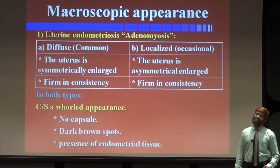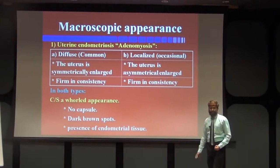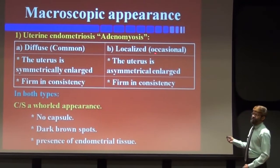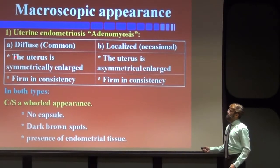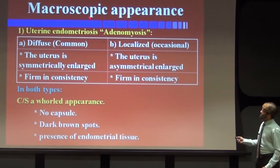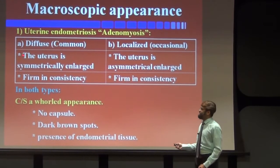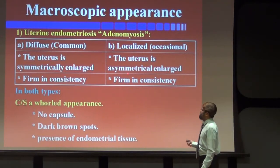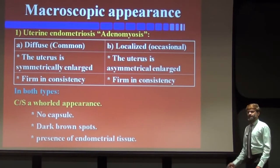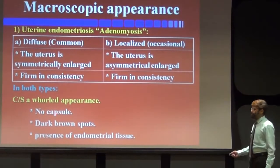In the diffuse type, which is common, there is symmetrical enlargement of the uterus. In the localized type, which is occasional, the uterus is asymmetrically enlarged. In both types, the endometrial area is firm in consistency. Also common to both is a whorled appearance, absence of capsule, dark brown spots, and presence of endometrial tissue.